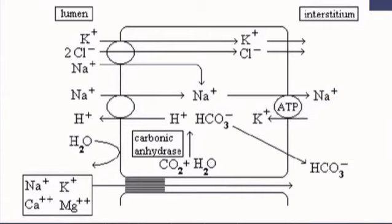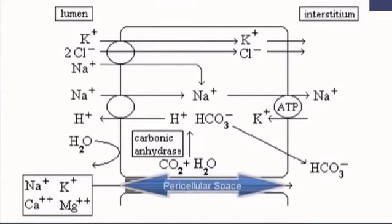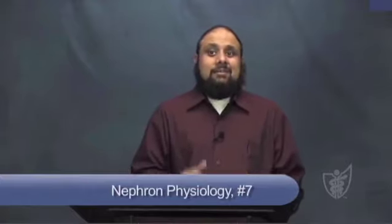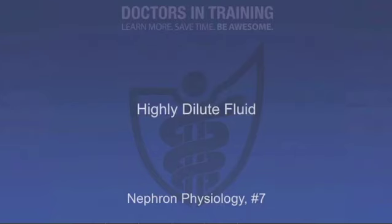That electrical potential drives magnesium ions and calcium ions via the paracellular space. The net result is that out of the fluid — which, in this area, is impermeable to water — we've lost sodium ions, potassium ions, two chloride ions, a magnesium ion, and a calcium ion. This results in a highly dilute fluid once we get to the other side of the thick ascending limb. On the other side, we're back in the cortex, still impermeable to water.